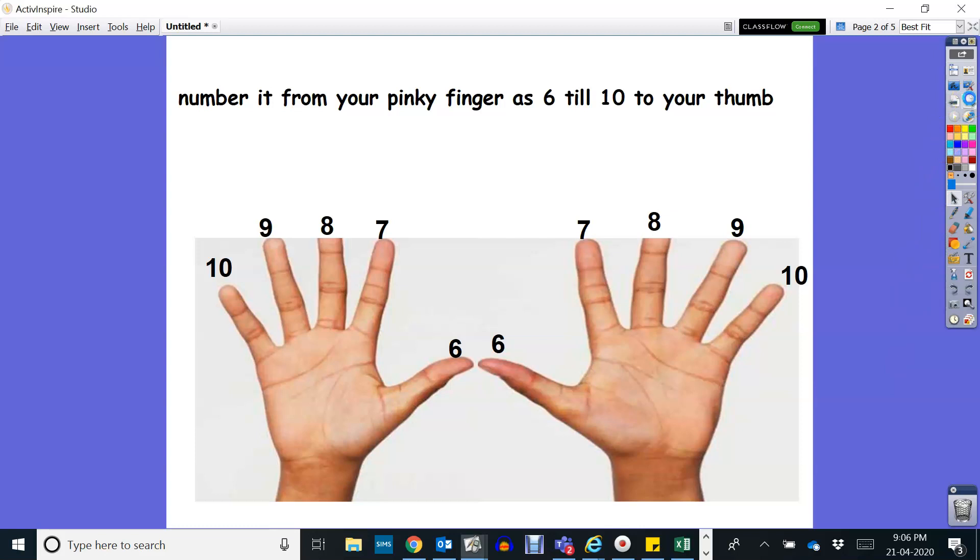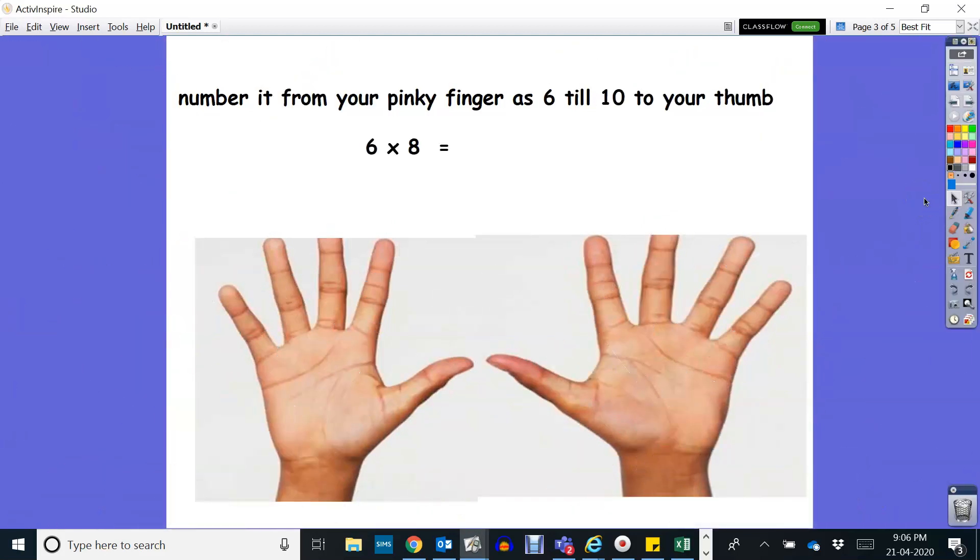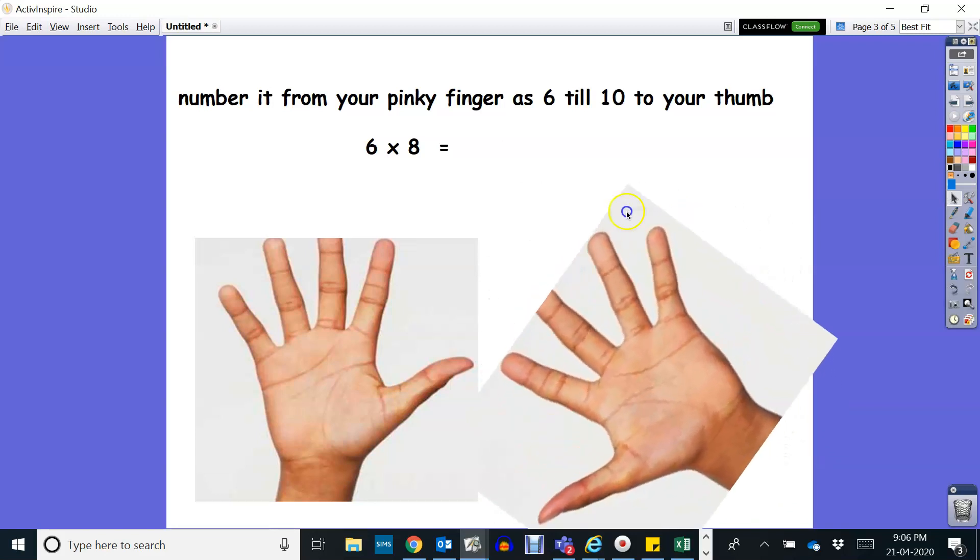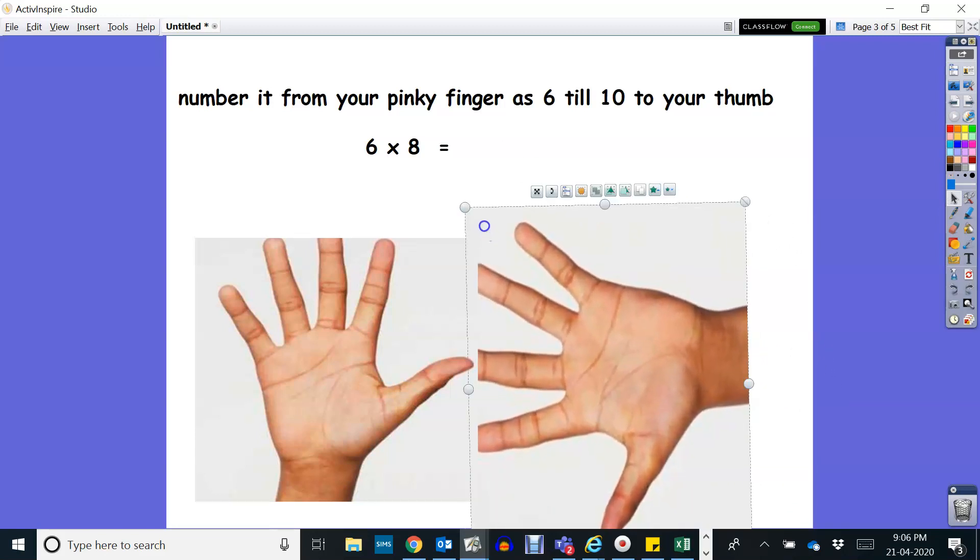So supposing you have a multiplication problem as 6 times 8. All you have to do, you know that your thumb is already the 6, so you have to move only your third finger to touch your thumb.